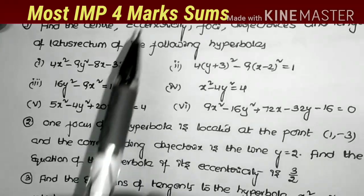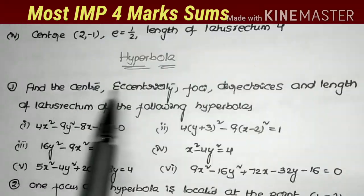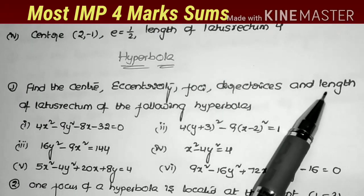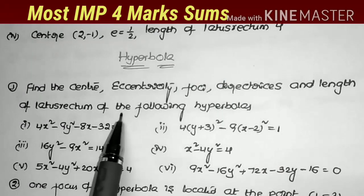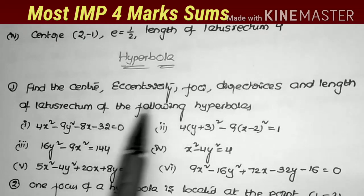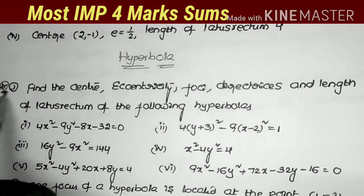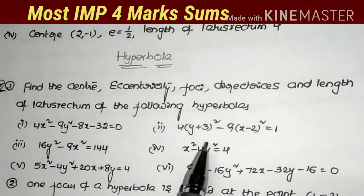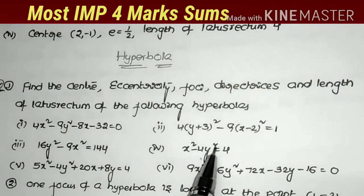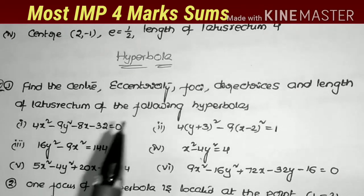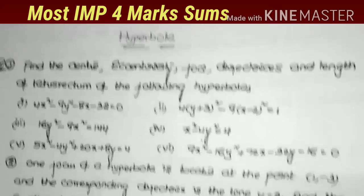Coming to the next chapter: hyperbola. First question: find the center, eccentricity, foci, directrices, and length of the latus rectum of the following hyperbolas. This is a very important model, same type as in ellipse. Guaranteed, a problem in the public examination paper comes from either the ellipse chapter or hyperbola chapter. Very important model.